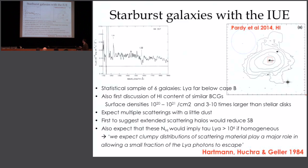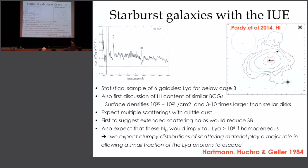This is a very important point: at this kind of column density, if the medium is completely homogeneous with evenly mixed dust, then radiative transfer in a completely homogeneous medium is going to give zero Lyman-Alpha output for the dust content measured in these galaxies. This sentence enters the literature in 1984: 'We expect a clumpy distribution of scattering material to play a major role in allowing a small fraction of the Lyman-Alpha photons to escape.' That's the way we see the state of play today.